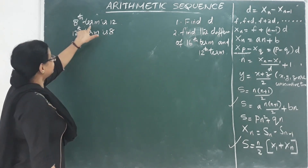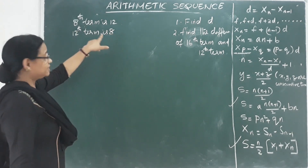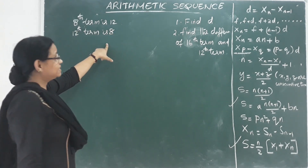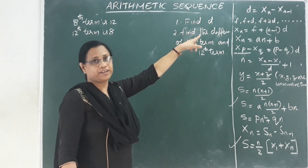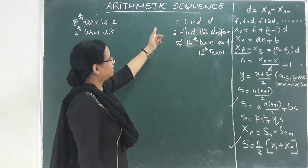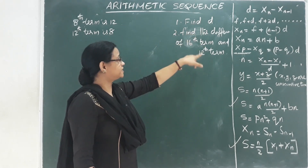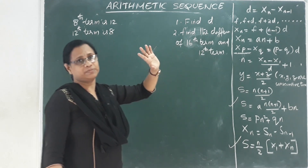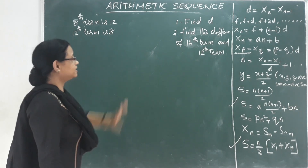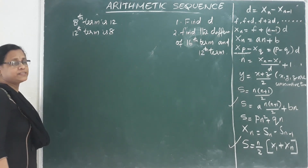Next question: the eighth term is 12 and the twelfth term is 8. Find the difference of the 16th term and the twelfth term. We need to find the common difference.